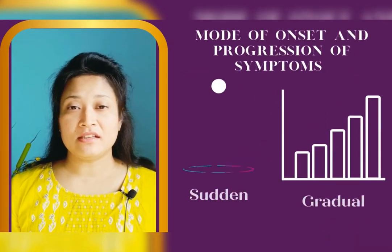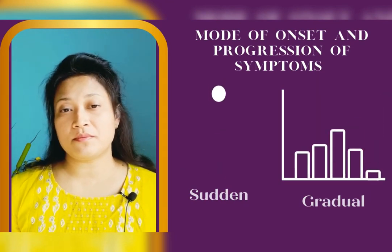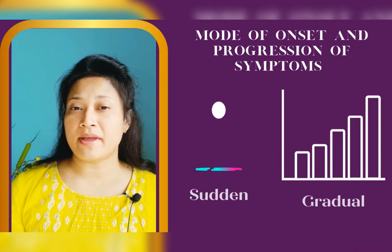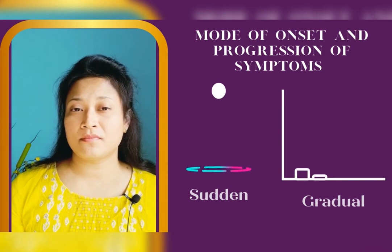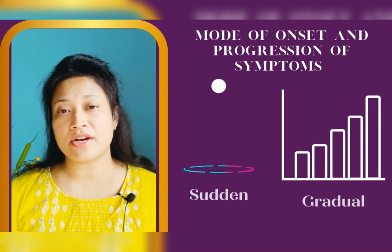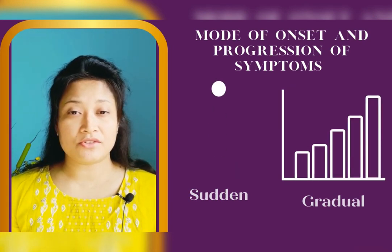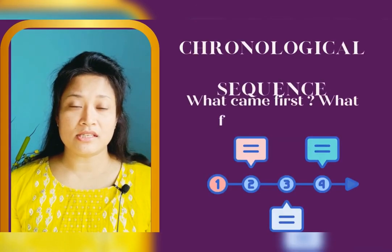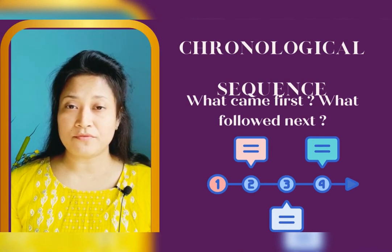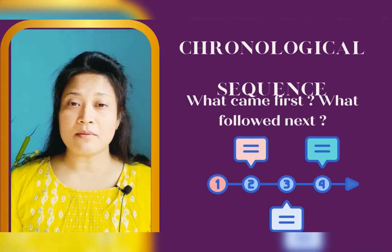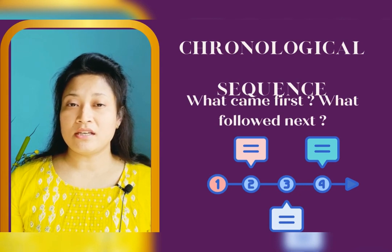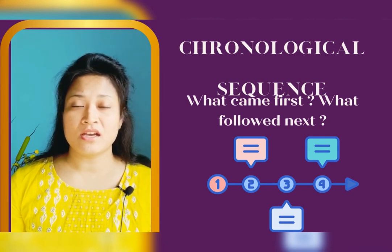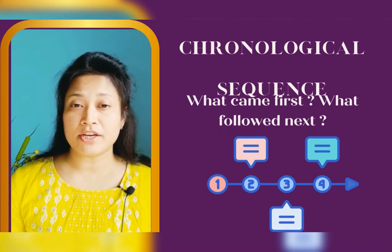The next important thing is the mode of onset and progression of symptoms. Onset can be sudden or gradual — a sudden onset can be compared to an abrupt drop of a ball, and gradual to a steadily rising bounce. Progression of symptoms can be described as steadily worsening, worsening in a series of steps, or relapsing and remitting. The chronological sequence of events must also be documented to understand the sequence of involvement of various systems. Additionally, negative information — such as the absence of certain symptoms — is often as helpful in differentiation as positive information; for example, absence of radiating pain excludes the possibility of peripheralization of symptoms.